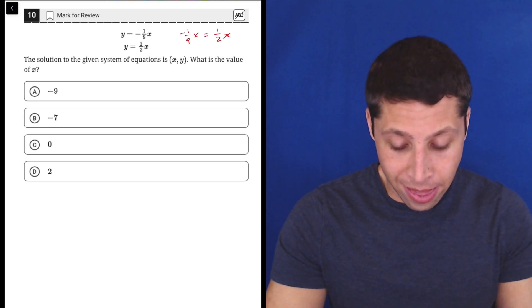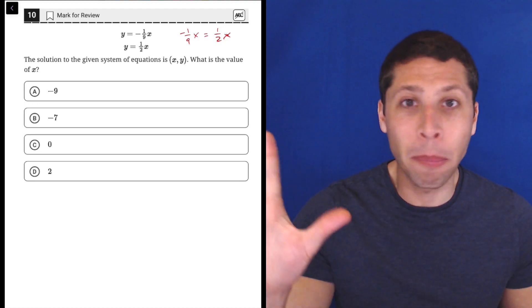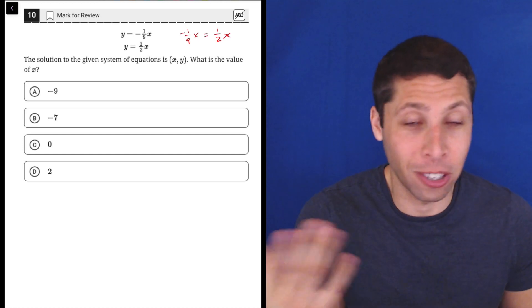So here's the way I would do it. They give us four values of x. It's not like we have to do algebra to find, out of the infinite values of numbers in the universe, the right exact number. There's only four possibilities here. Let's just test them out.